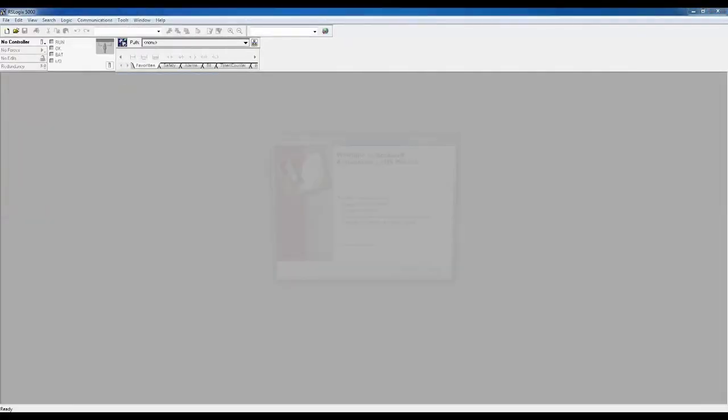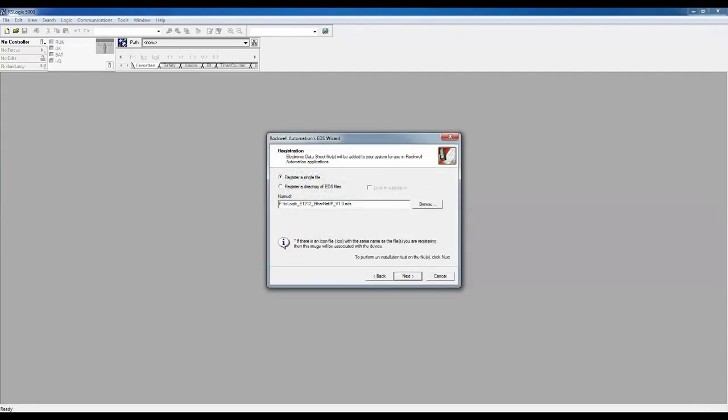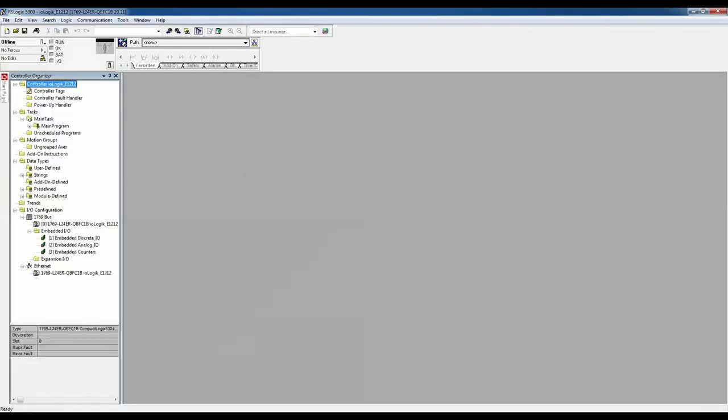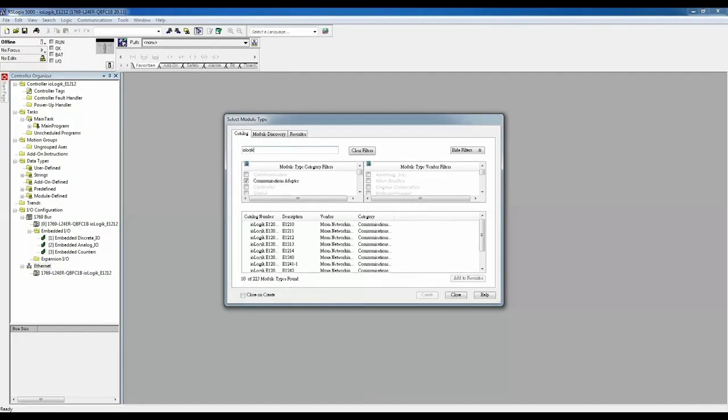First, import the EDS file for your IO-Logic E1200 series device. Next, add your IO-Logic E1200 series device as a new module.